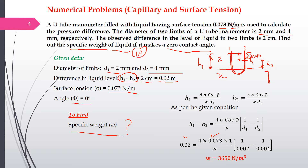Substituting the values: h1 − h2 = 0.02 m, cos(0°) = 1, d1 = 0.002 m, and d2 = 0.004 m. From this equation we solve for w, the specific weight.